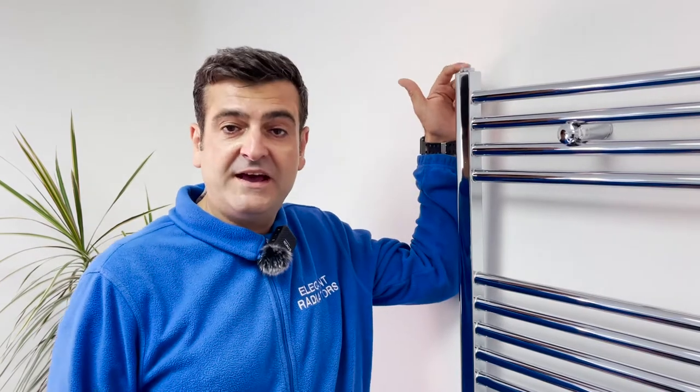Towel rails and radiators on central heating over time trap air in the top part, which results in the bottom part heating while the top part stays cold. To avoid that, we need to take the air out once a year or when you have a problem.